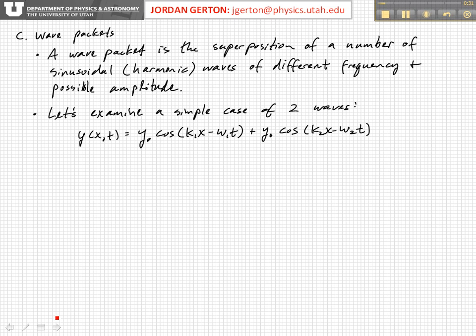And the way that you create such a wave packet is that you superpose several sinusoidally varying or harmonic waves of different frequency and potentially of different amplitude, although we're going to consider the simplest case right now of just two waves that have the same amplitude, y sub zero.